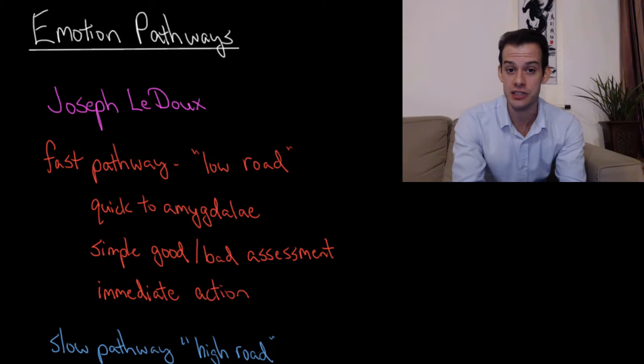But the basic idea is that there's two main pathways that information travels on, a fast pathway and a slow pathway. So the fast pathway, which LeDoux also calls the low road, goes quickly to the amygdala. And this allows us to have a simple good or bad assessment of a stimulus. And then based on this simple assessment, we can prepare for immediate action. That's why this is the fast pathway.